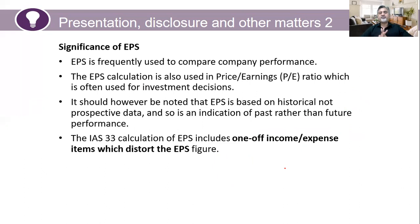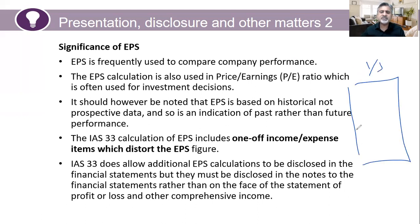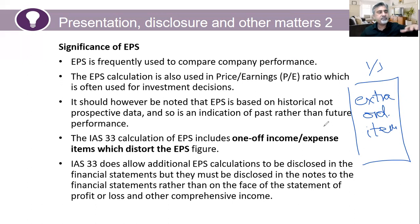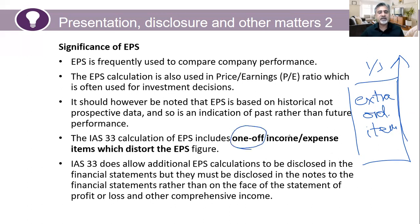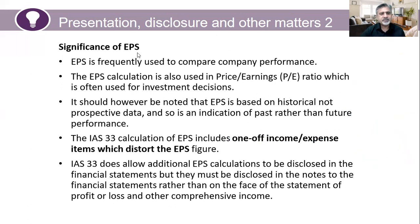Additionally, IAS 33's calculation of EPS can include one-off income or expense items which distort the EPS figure. For example, if a country hosts the Olympics, a company may receive larger contracts that year boosting profits — but the Olympics don't happen every year. Such extraordinary items mean EPS in a given period may not reflect the normal recurring performance of the business. This concludes the chapter on EPS, which is an important and interesting topic.